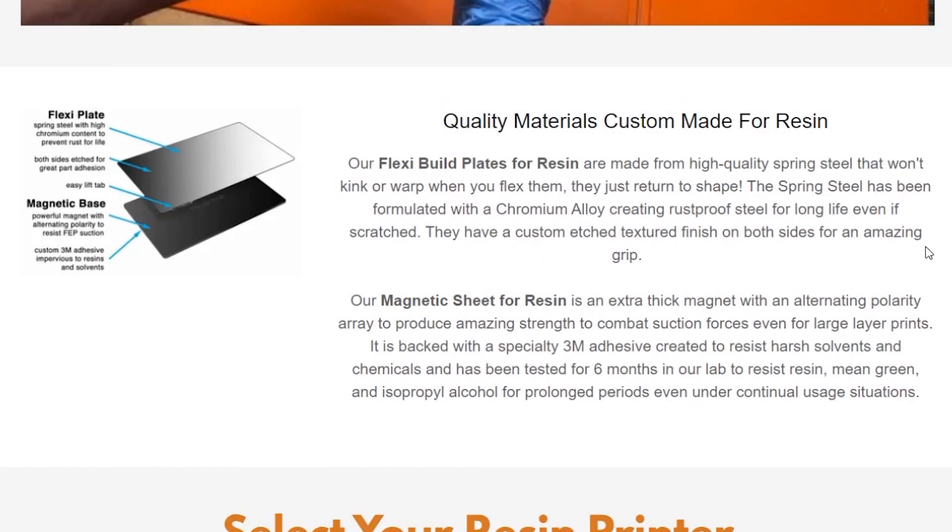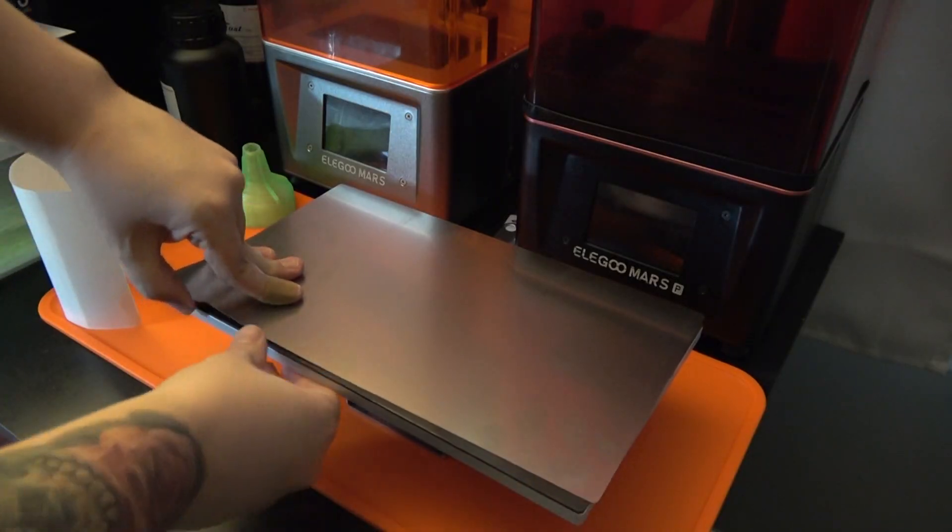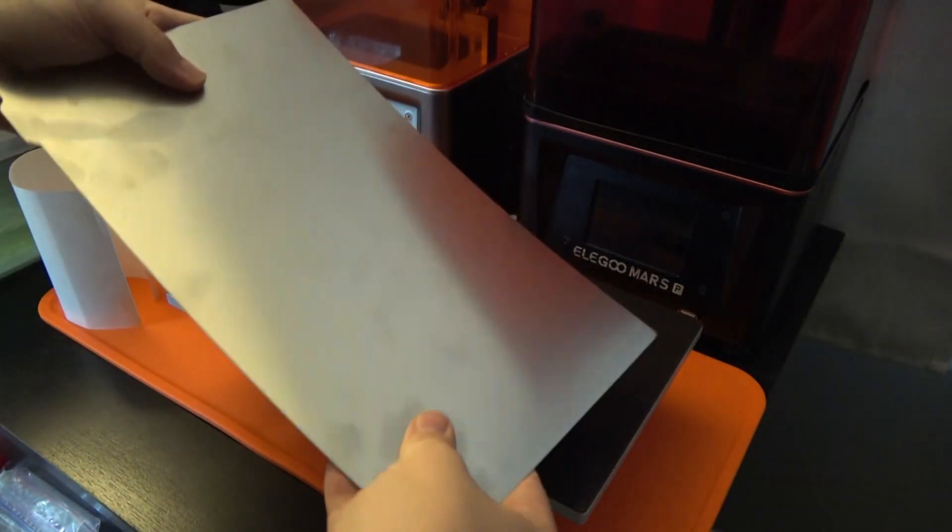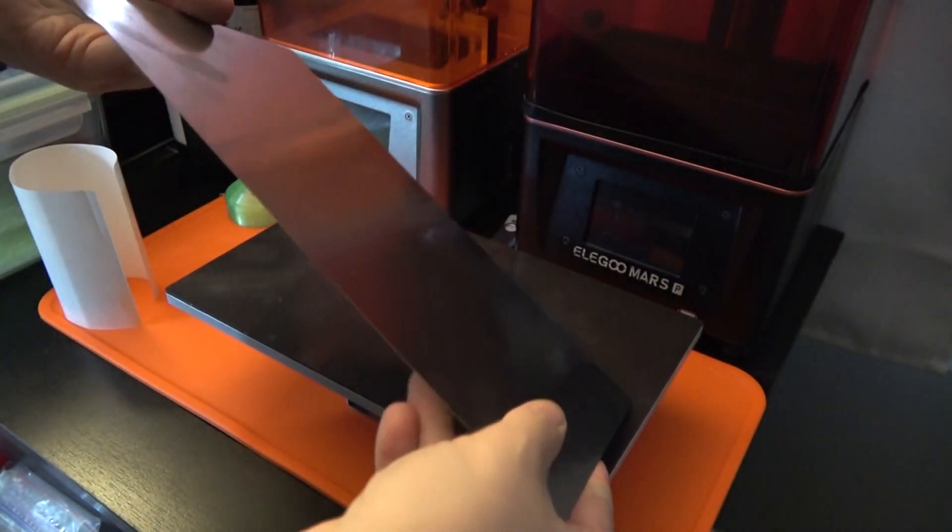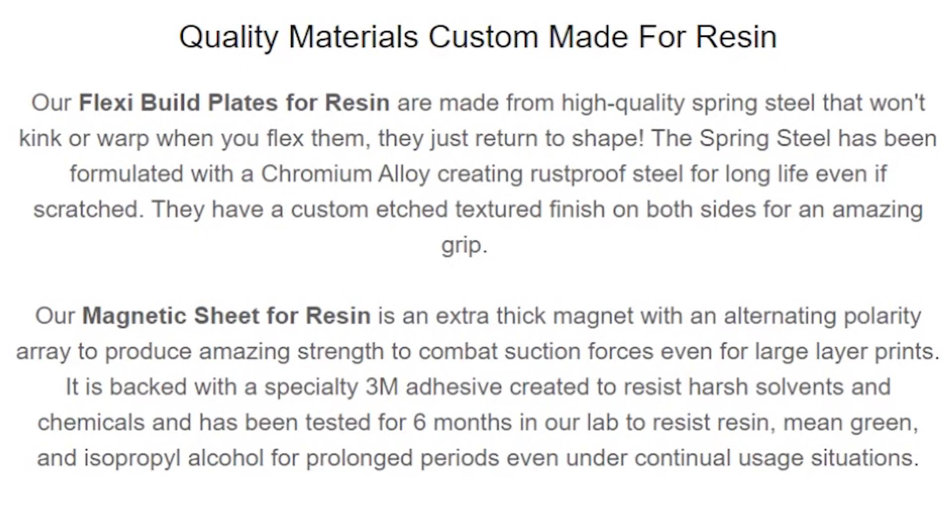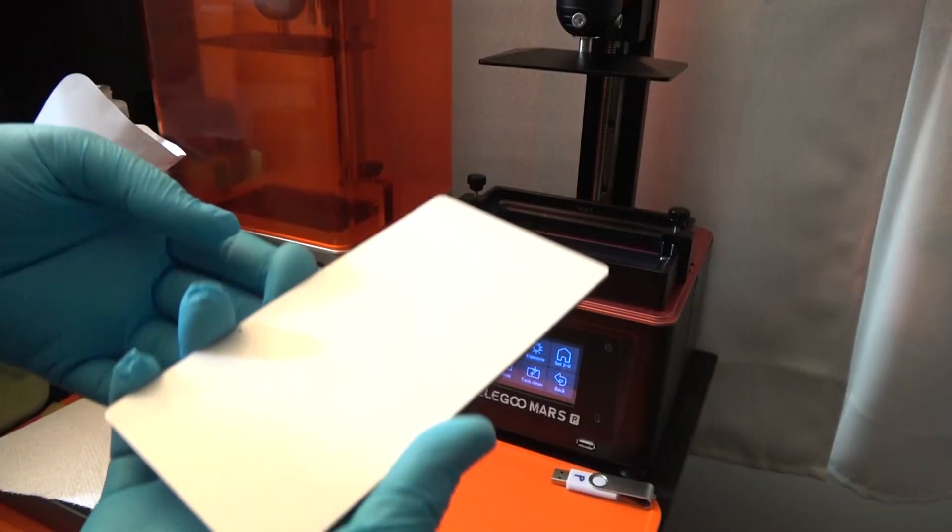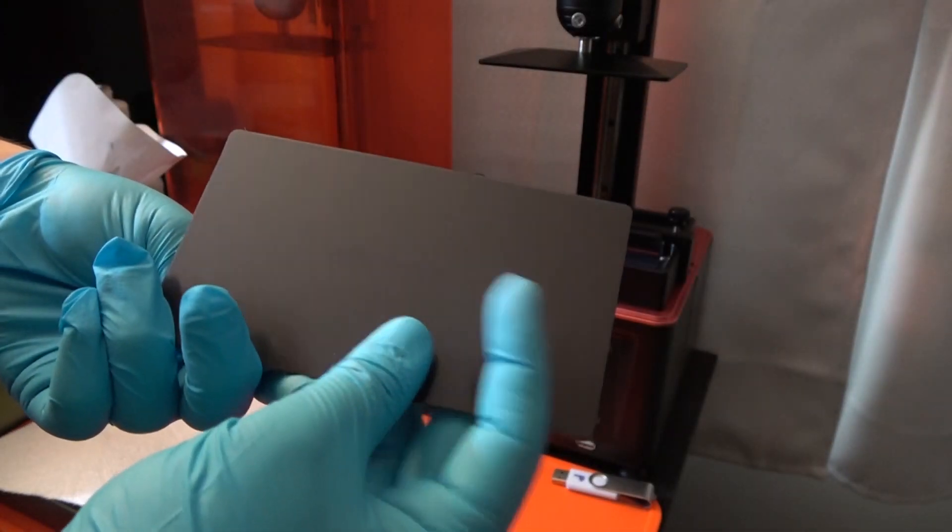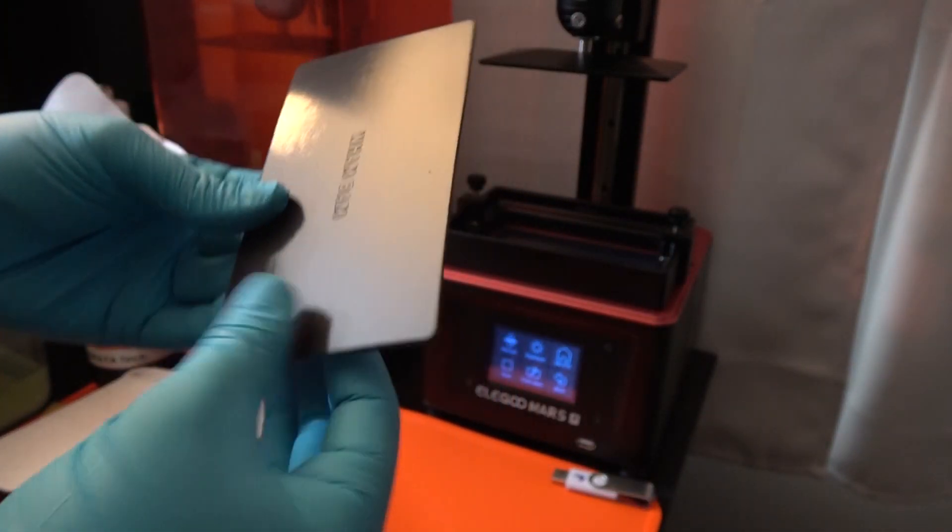For anyone who has resin printers this is going to be a game changer for you. Just like the other flex plate systems these are made from the same high quality spring steel that will not kink or warp when you flex them which is very important that they return to their shape. Now you may think how in the heck is this going to work with resin? The way that they've done it is a very specific magnetic sheet that uses a special 3M adhesive that is going to resist all of those super harsh chemicals that you're going to get from the resin and all of your cleaning agents that you use after your resin prints are completed.